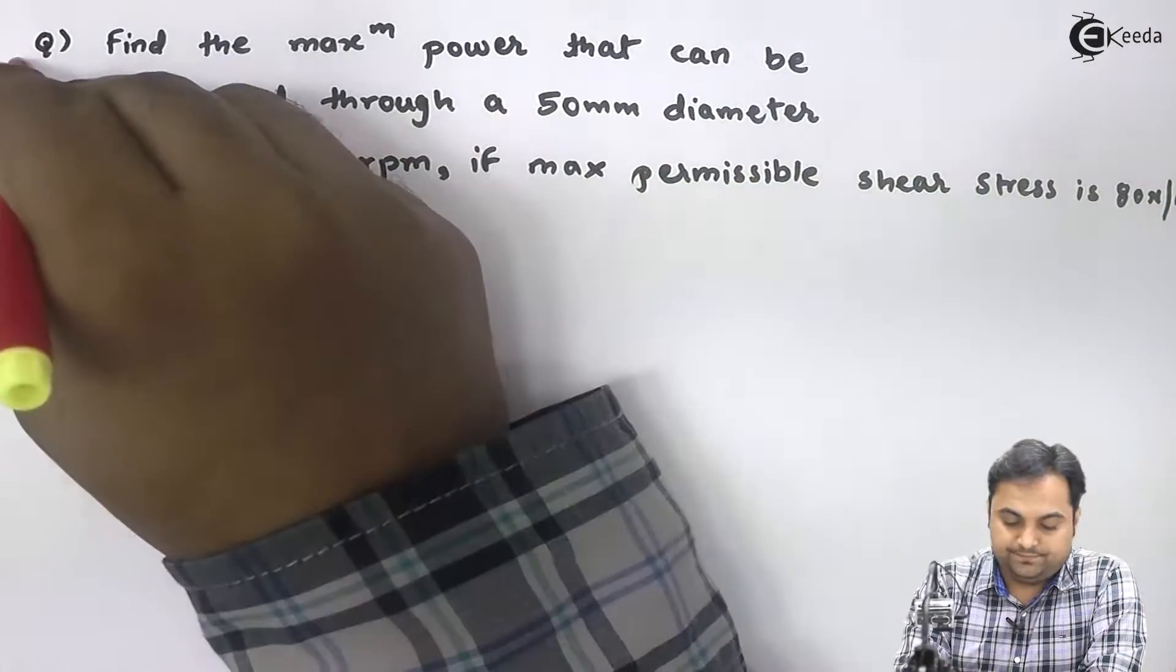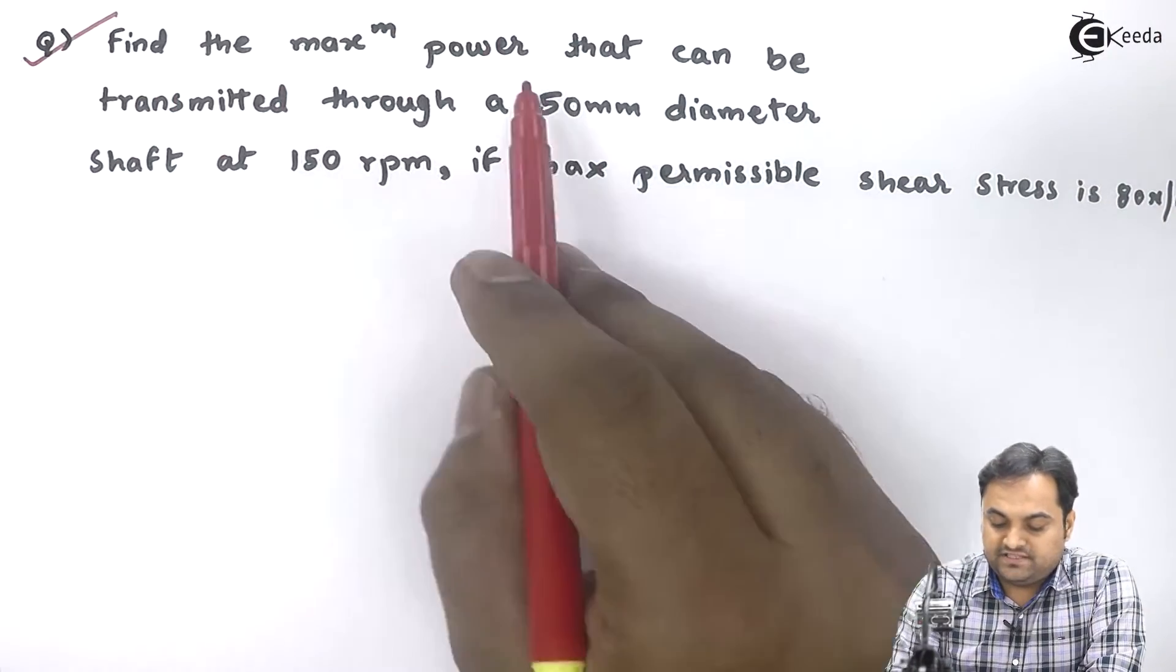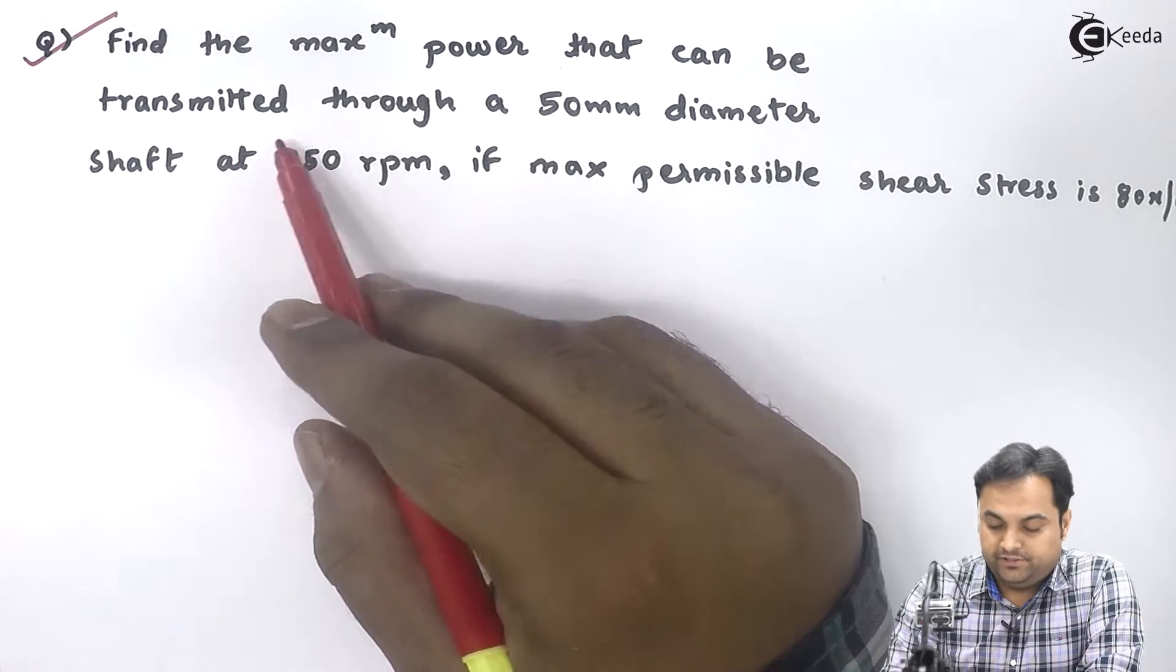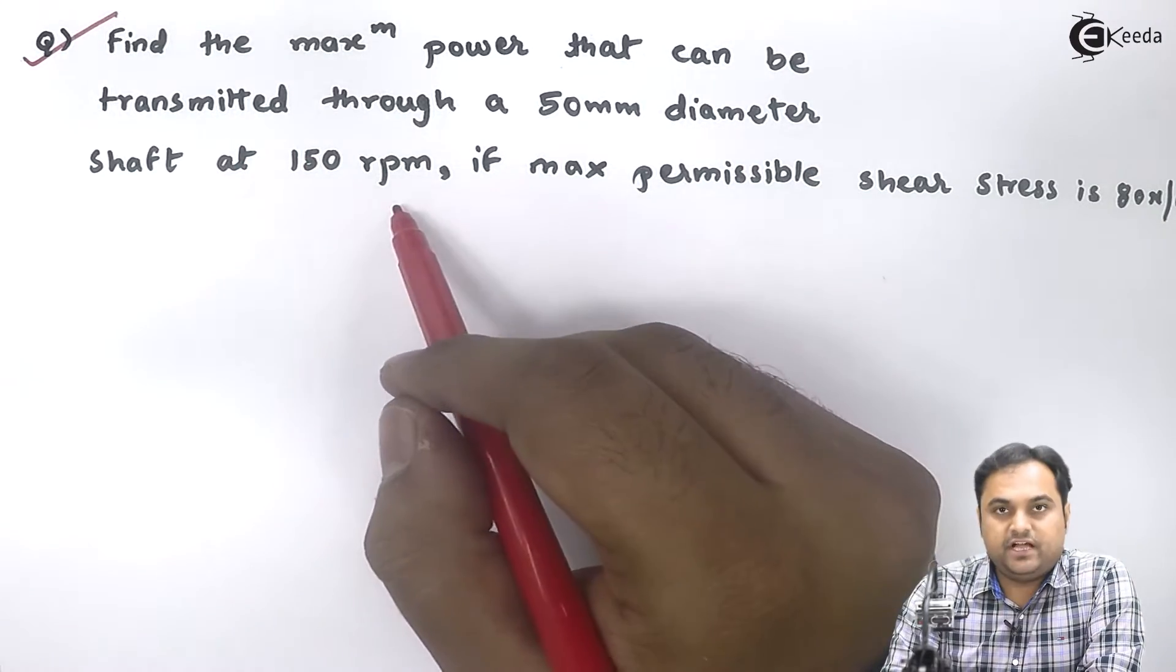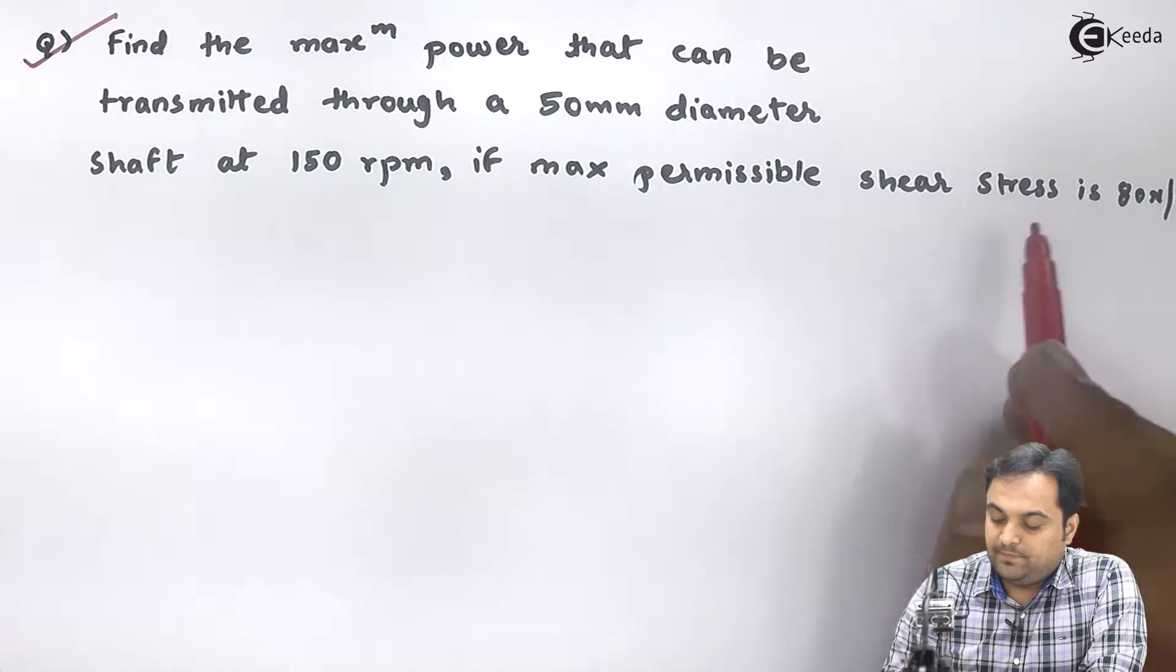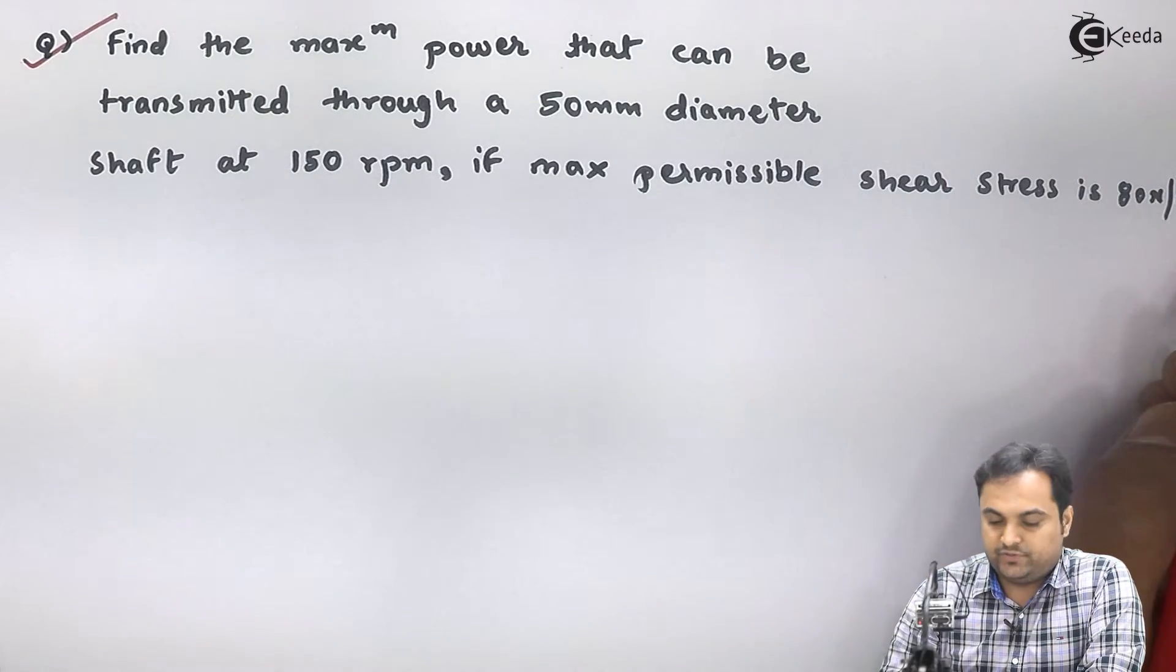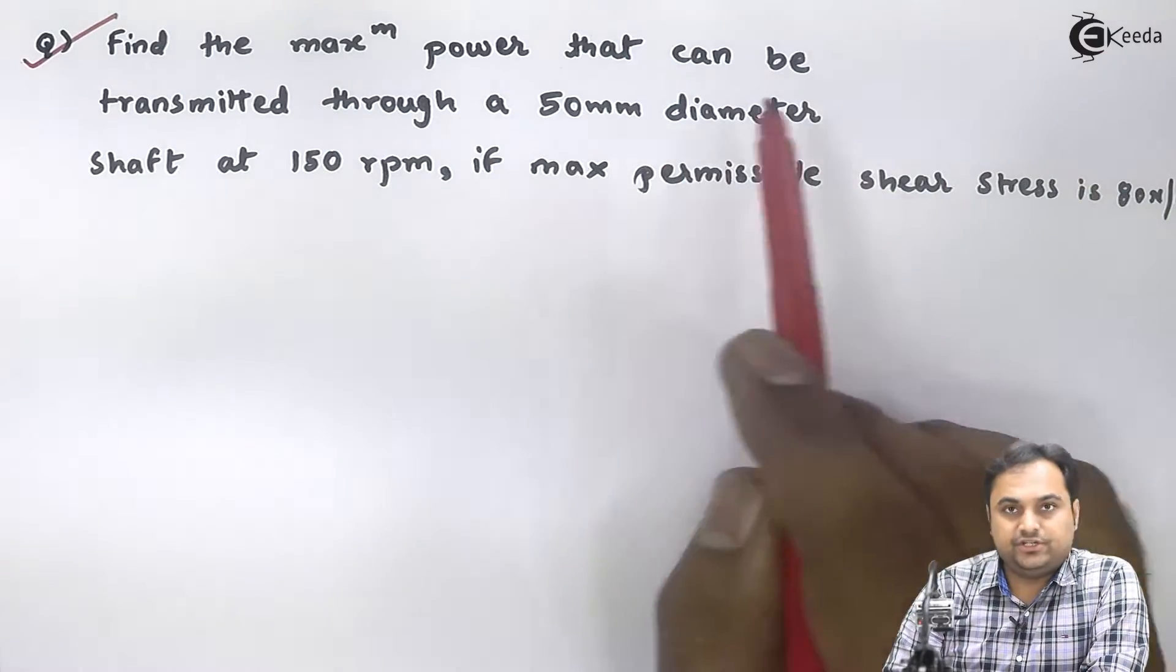Let us take the next question: Find the maximum power that can be transmitted through a 50mm diameter shaft at 150 rpm, if maximum permissible shear stress is 80 Newton per mm squared. Again, we have a question here.